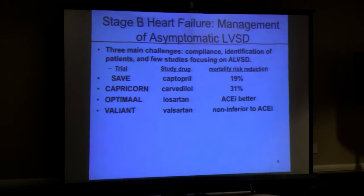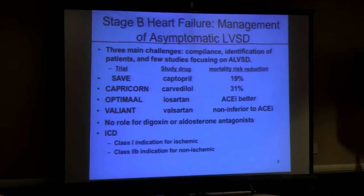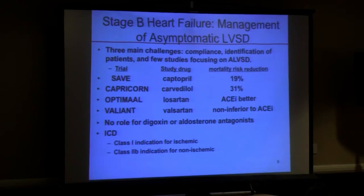Very few studies have examined asymptomatic LV dysfunction, but we know ACE inhibitors and beta blockers help. If you can't take an ACE inhibitor, ARBs are an alternative. There is no current role for digoxin or aldosterone antagonists in asymptomatic LV dysfunction. For ICDs, it's a class 1 indication for ischemic patients but only class 2b for non-ischemic — meaning limited data, not contraindicated, but requires frank discussion with the patient about pros and cons.